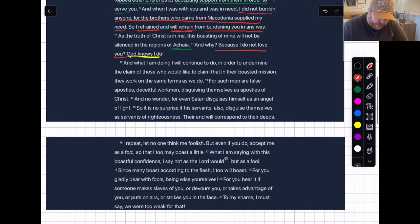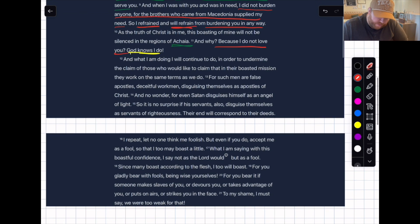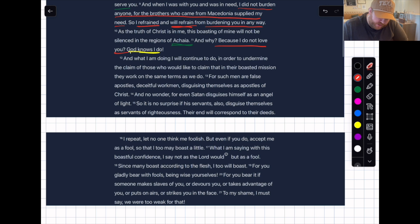What I am doing I will continue to do in order to undermine the claim of those who would like to claim that in their boasted mission they work on the same terms as we do. Again, this is those super apostles. They claim in their boasted mission that they work the same as we do. Now watch what he follows up. For such men are false apostles, deceitful workmen disguising themselves as apostles of Christ. This is a big deal—disguising themselves as apostles of Christ.